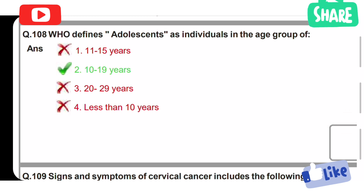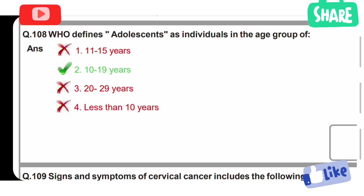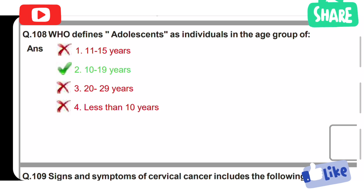WHO defines adolescence as individuals in the age group: Option 1: 11 to 15 years. Option 2: 10 to 19 years. Option 3: 20 to 29 years. Option 4: less than 10 years. Option 2 is the correct answer. The age group of 10 to 19 years is called adolescence.